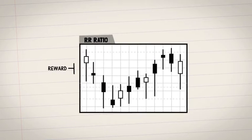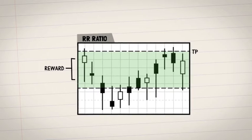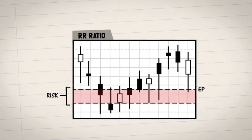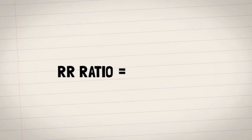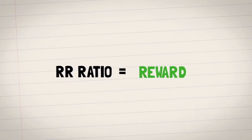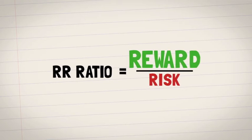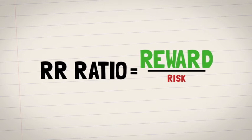To calculate reward, you take the difference between the TP and the EP, while the risk is the difference between the EP and the SL. The RR ratio is then calculated by taking the reward and dividing by the risk. Hence, the higher the reward, the better the RR and the lower the risk, the better the RR.